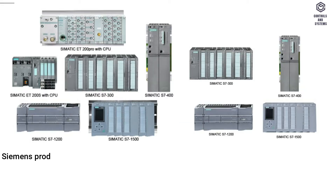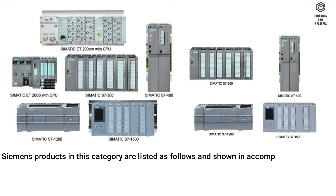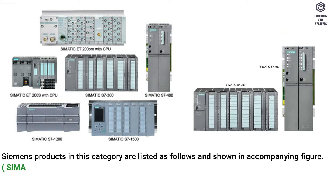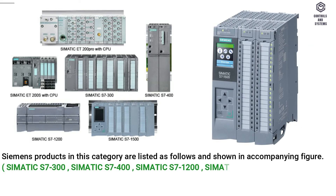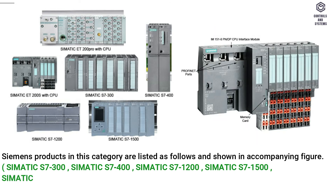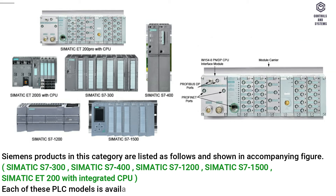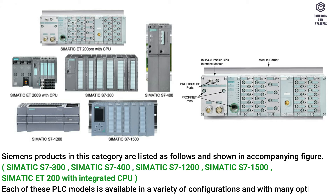Siemens products in this category are listed as follows and shown in accompanying figure: Somatic S7-300, Somatic S7-400, Somatic S7-1200, Somatic S7-1500, and Somatic ET200 with Integrated CPU. Each of these PLC models is available in a variety of configurations and with many options.